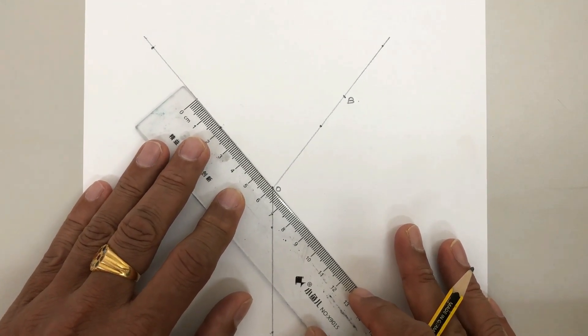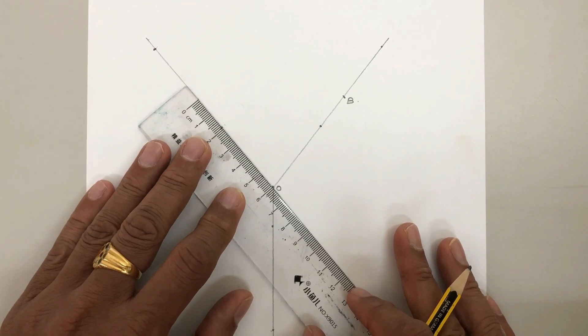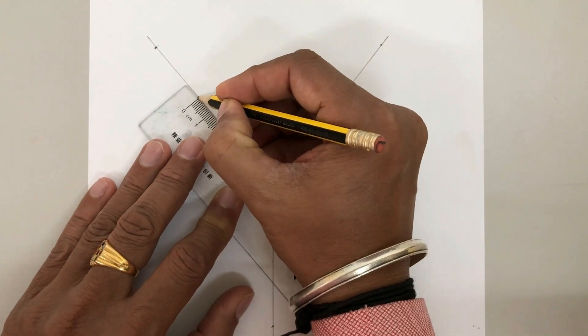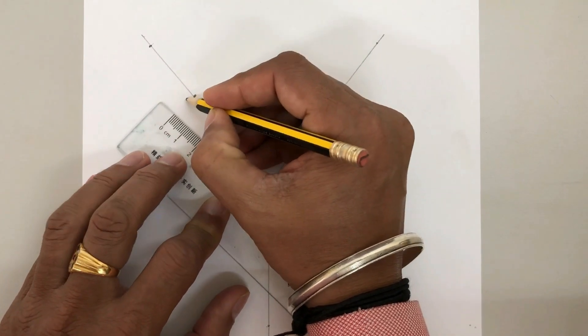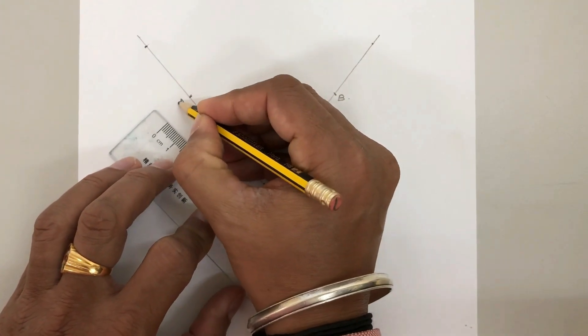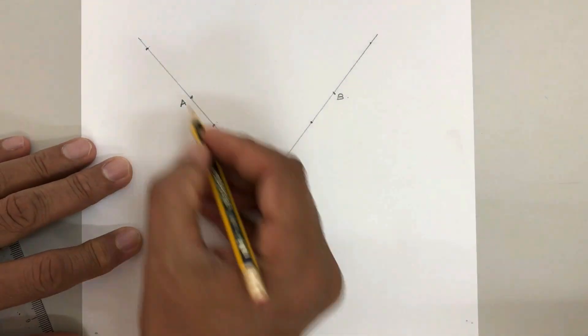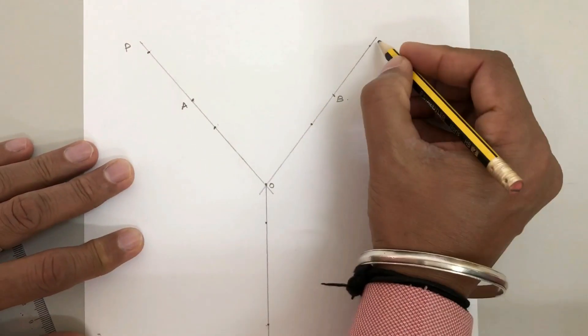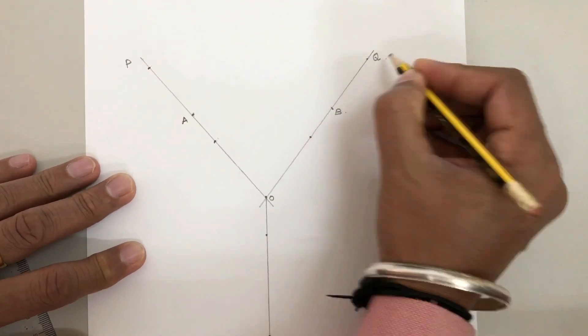And again on this line we can measure 6 centimeters and mark it as A. So this line represents P and this line represents Q.